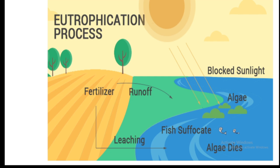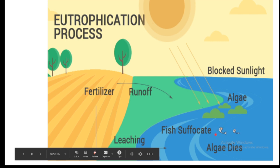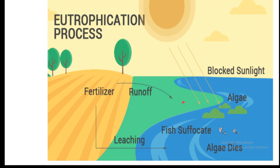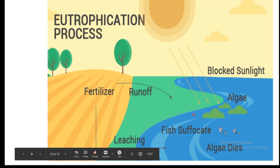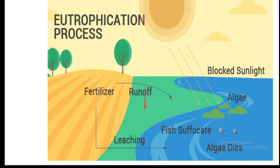Eutrophication is the contamination of water resulting from phosphate- and nitrate-rich fertilizers, which make freshwater bodies nutrient-rich and favor algal growth, resulting in algal bloom. The process in which water bodies get nutrient-rich, thereby supporting massive algal growth, is known as eutrophication. The algae grows due to the rich content of nitrates from fertilizers used in agriculture, blocking sunlight and causing fish suffocation.